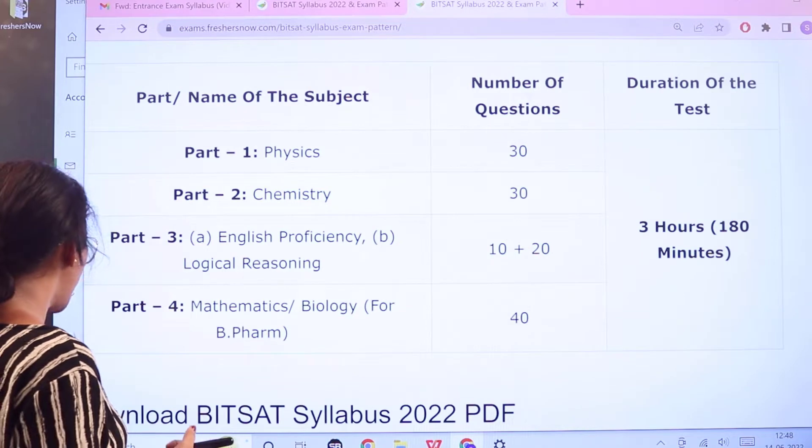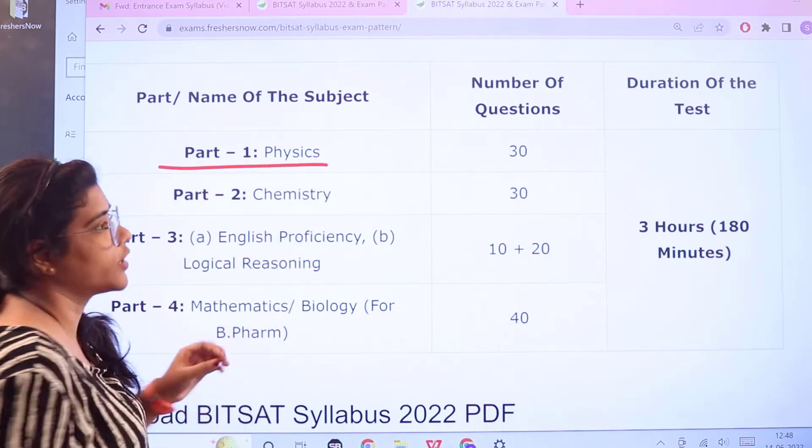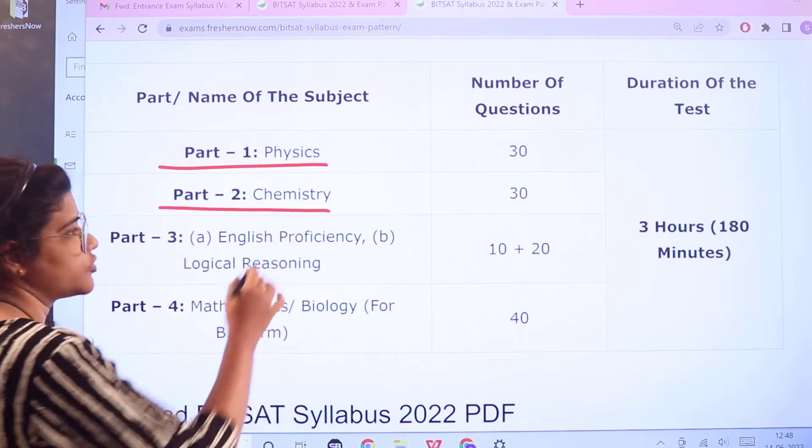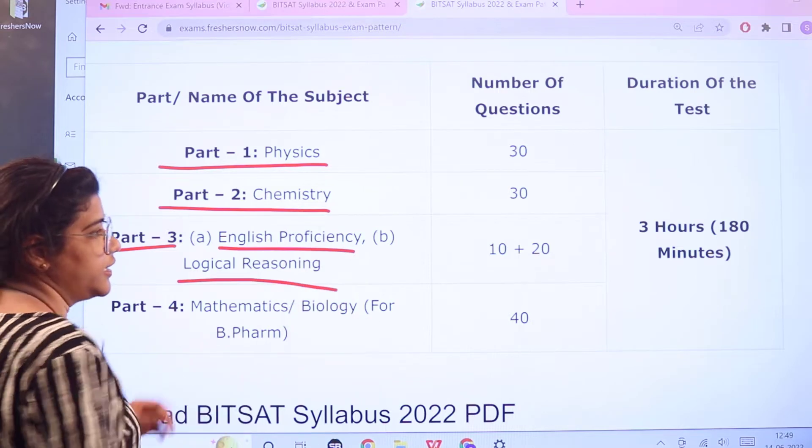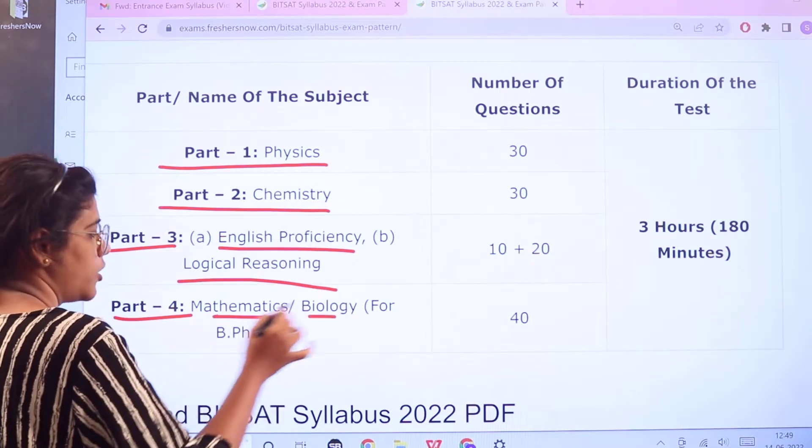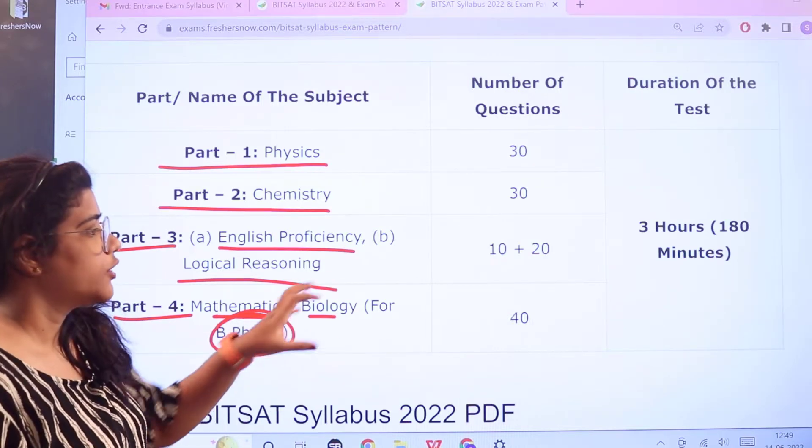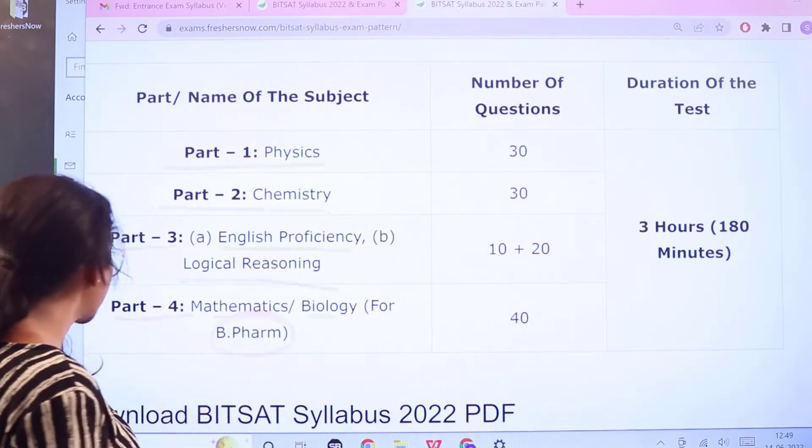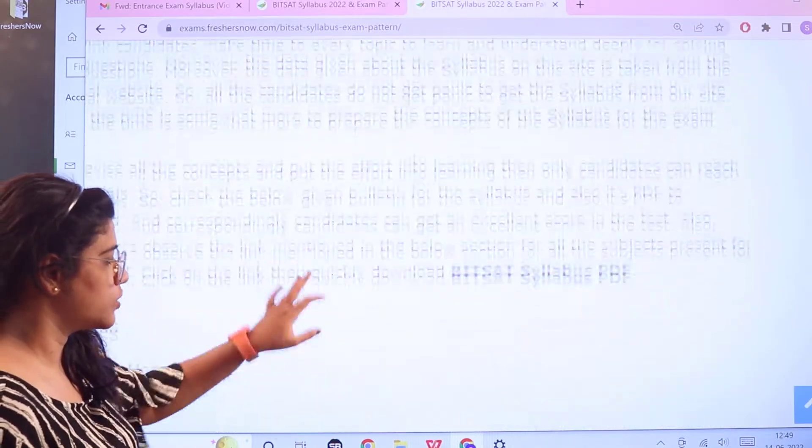So here you have part wise sectioning, part one you have physics 30 questions, part two chemistry 30 questions, part three you have English proficiency and logical reasoning 10 plus 20 questions, then part four mathematics or biology according to the choice of course that you are choosing you have 40 questions. Now this is the examination pattern. Next we would be looking into the syllabus.